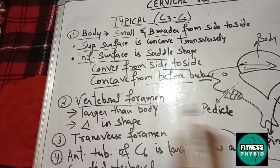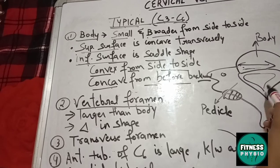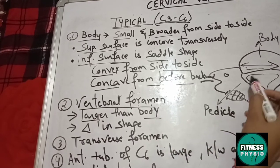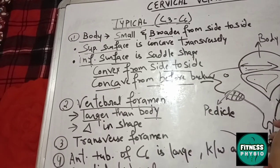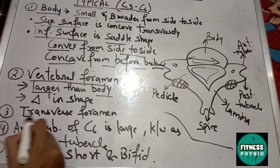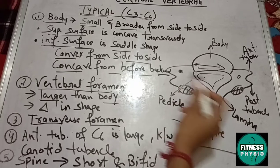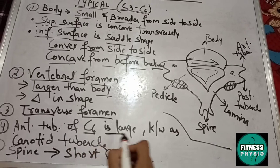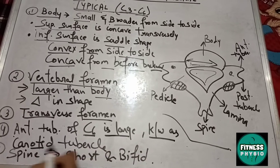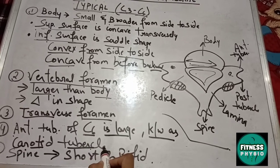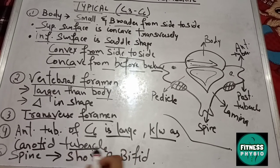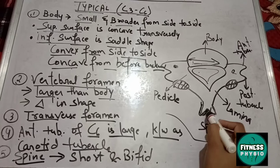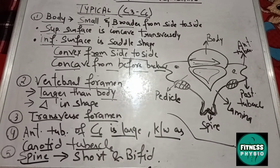The vertebral foramen is triangular in structure and larger than the body. Typical cervical vertebrae also have a transverse foramen — a hole in the transverse process. Notably, the anterior tubercle of C6 is large and is known as the carotid tubercle, as there is a chance of compression against the carotid artery. The spine is short and bifid, divided into two.